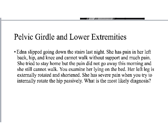Edna slipped going down the stairs last night. She has pain in her left back, hip, and knee and is not able to walk without quite a bit of pain. She tried to stay home overnight but the pain hasn't gone away, so she comes to the emergency room. Her left leg is externally rotated and looks shorter than the right leg. She has severe pain when you try to rotate that hip internally. Think about the type of injury, what you're seeing on the exam, where her pain is, and try to figure out where the injury might be. We will come back to Edna about halfway through this lecture.